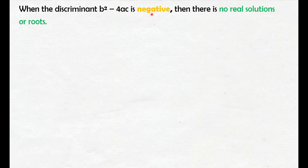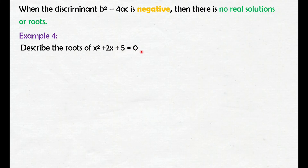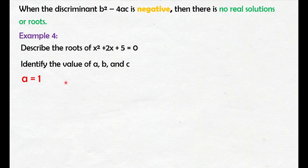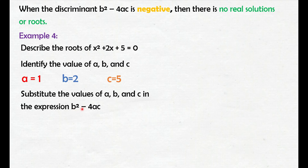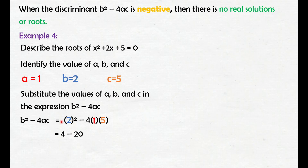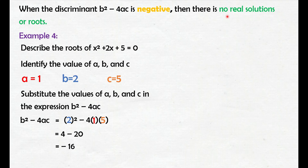When the discriminant b squared minus 4ac is negative, then there is no real solutions or roots. Example number 4: describe the roots of x squared plus 2x plus 5 equals 0. Identify natin yung value ng a, b, and c: yung a natin is 1, b is 2, and c is 5. Substitute the values in b squared minus 4ac: si b ng 2, si a ng 1, at si c ng 5. Simplify: 2 squared is 4, negative 4 times 1 times 5, that is negative 20. 4 minus 20, that is negative 16. Yung discriminant ay negative 16, kaya yung makukuha daw nating roots ay no real solutions or roots.